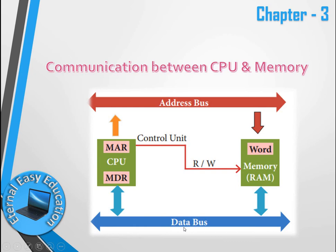The data bus carries the actual data content, while the address bus carries the address. Both look like numbers, but there is a difference. For example, if you are adding 10 plus 20, the values 10 and 20 are stored in memory — the address tells you where they are stored, while 10 and 20 themselves are the data. So there are separate mechanisms for data and address.